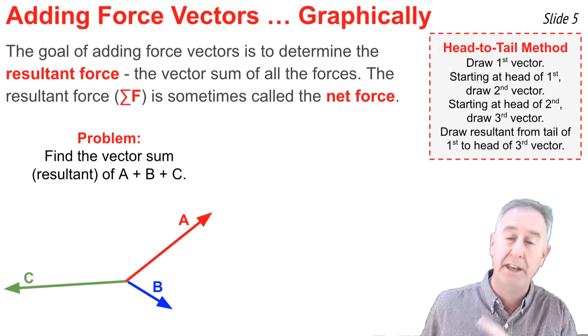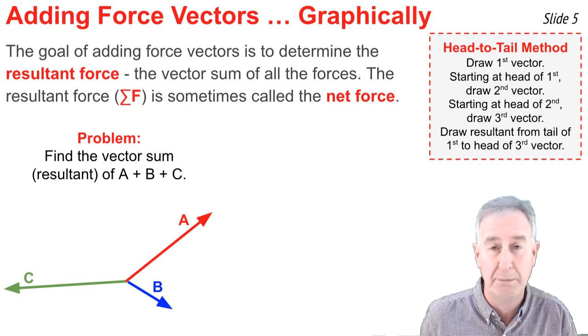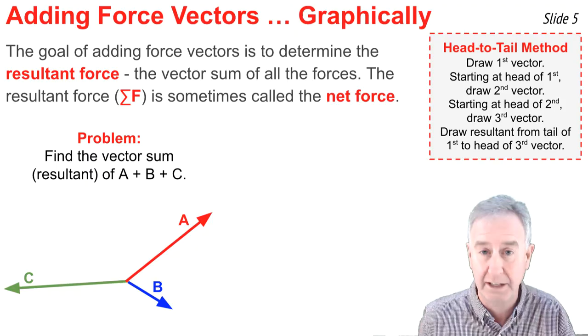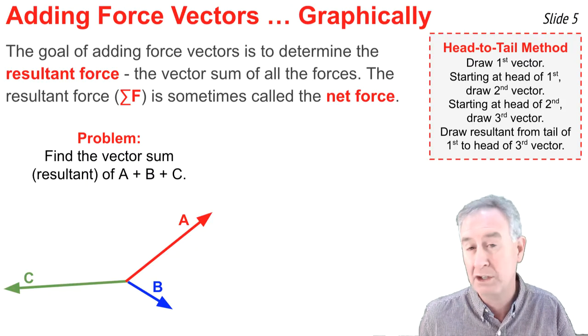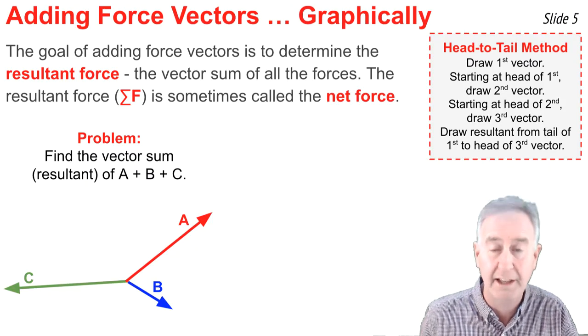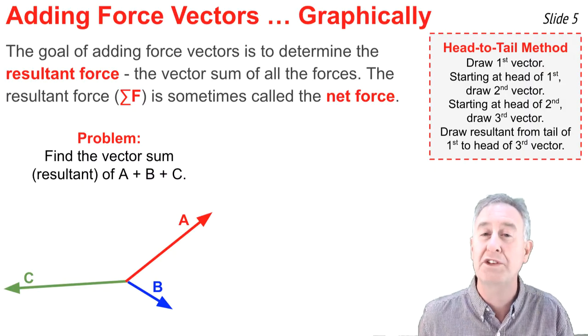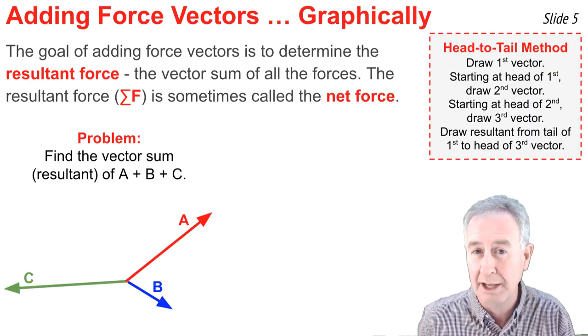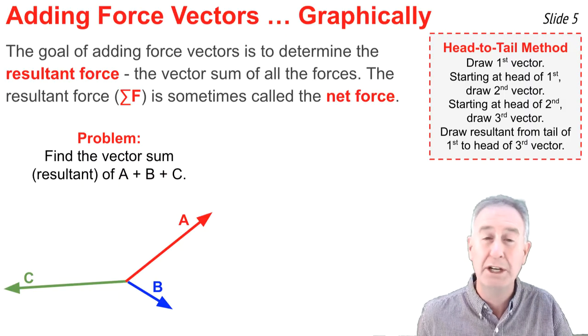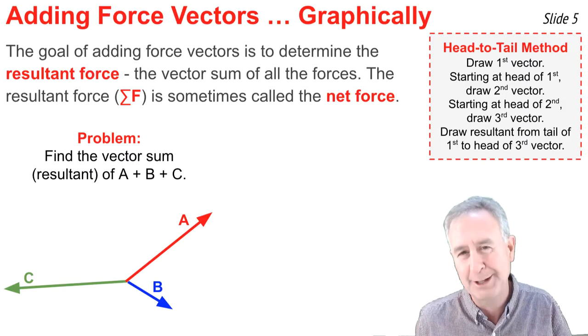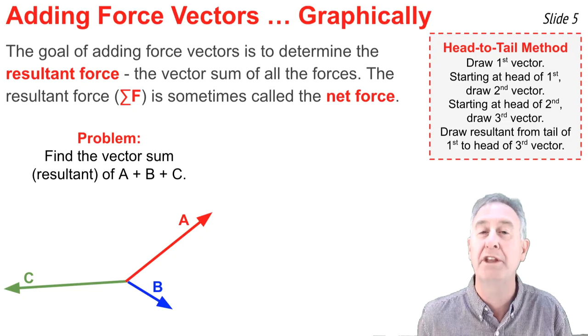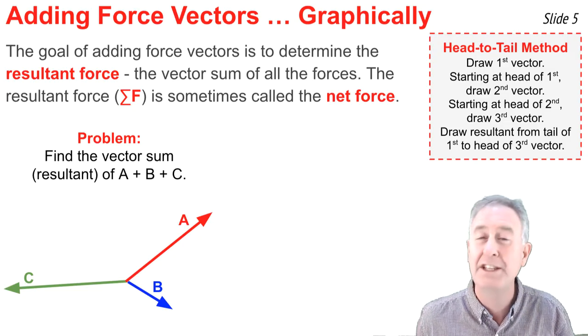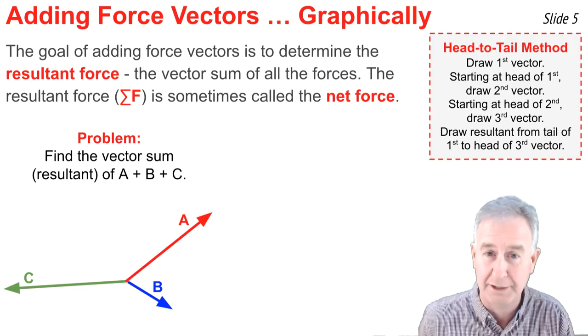We'll discuss the head to tail method for graphically adding these vectors together. In the head to tail method, I begin by drawing the first vector, maybe vector a. And where its arrow head ends, I begin the second vector from that point. So I start the second vector at the head of the first vector. And where the second vector ends, I begin the third vector at the arrow head of the second vector. When I'm done drawing all the vectors in the head to tail fashion, I can determine the net force or resultant force by drawing it from the tail of the first vector to the arrow head of the last vector.